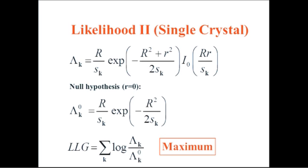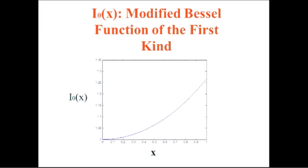It looks pretty awful, but actually it's very straightforward to understand. It's got this function I₀, which you're going to see from time to time in a lot of talks. This is a modified Bessel function of the first kind, and it looks like that.